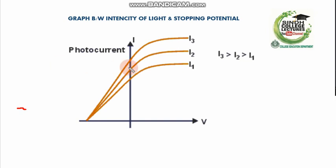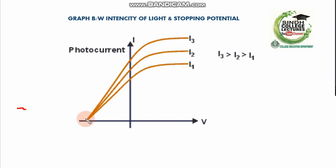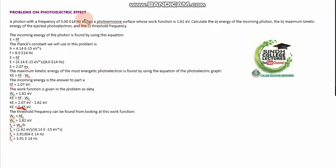This is the last graph — the graph between intensity of light and stopping potential. Three intensities are shown: I₃ is greater than I₂ is greater than I₁. All intensities have the same frequency. When the frequency is the same, the kinetic energy is the same, and therefore the stopping potential is the same. This shows that stopping potential does not depend on the intensity of incident photons.